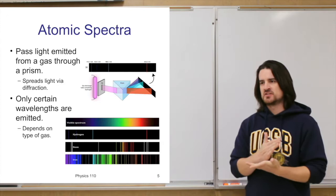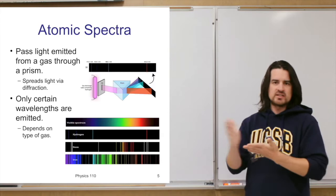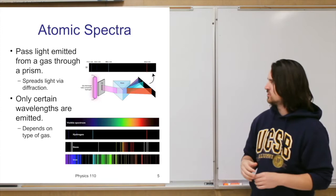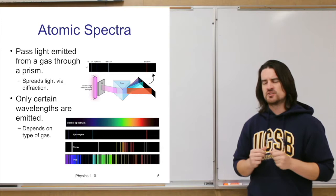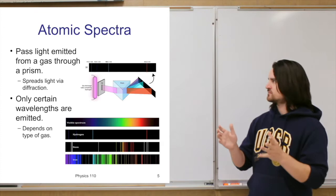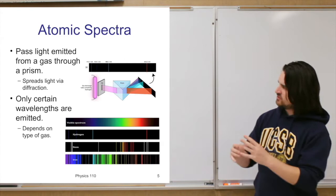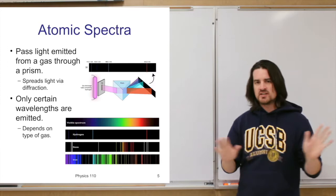One area where the evolution of quantum ideas really played out was in understanding the atomic spectra of different elements. The atomic spectra is essentially just the light that different elements give off after you energize them—pumping energy in, causing them to emit photons. If elements gave off the whole visible spectrum, you'd get white light, but that's almost never the case. Instead, each element emits only specific wavelengths.